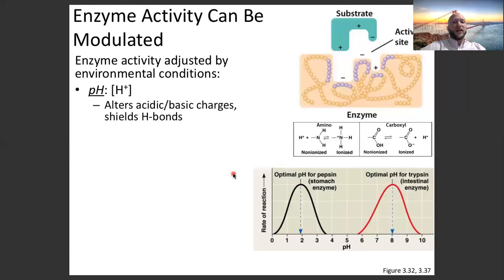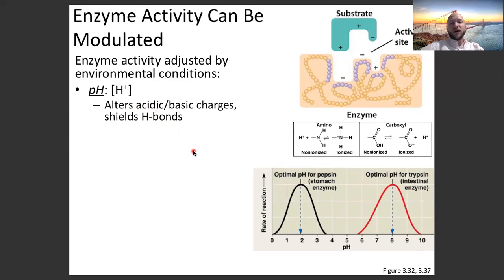Enzymes also have an optimal pH. Hydrogen ions can alter acidic and basic charges and shield hydrogen bonds. Different compartments in our body have different pHs, which allow specific reactions to take place. Our stomach is very acidic — pepsin is a stomach enzyme and its optimal pH is 2. Over here we have an intestinal enzyme, trypsin, with an optimal pH of 8. If you put trypsin in your stomach, it won't function. If you put pepsin in your intestines, it won't function either. There are optimal pHs for the function of these enzymes.